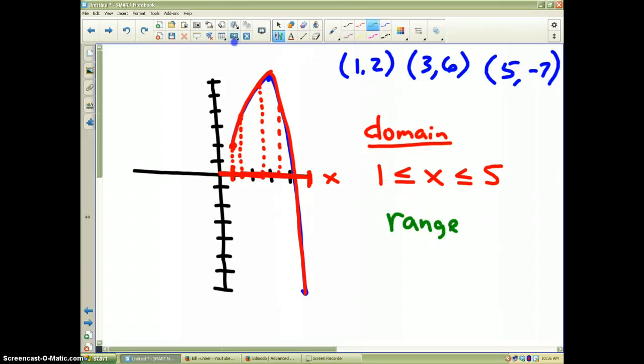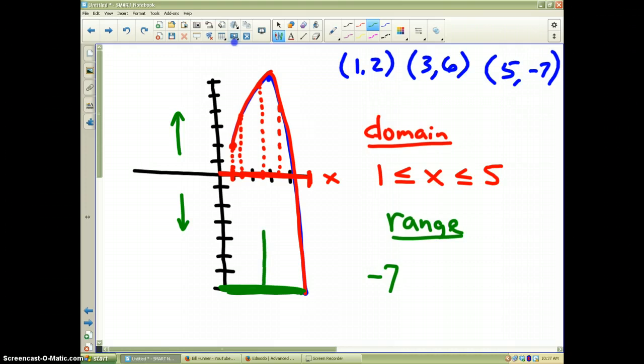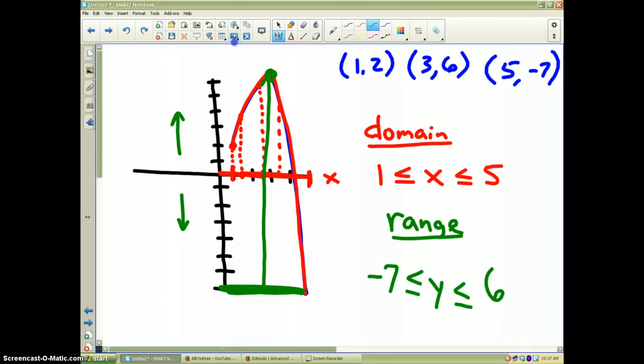Now, let's talk range. Remember, range is the y values. Range is how high and how low the graph gets. Well, if you notice, the low number is all the way down here at negative 7. That's the lowest point of the grid. So, therefore, negative 7 comes first. And the graph makes it to a high point all the way up here at 6. So, therefore, my y values are in between negative 7 and 6. And that is the domain and range for this particular graph.